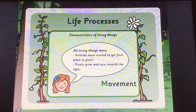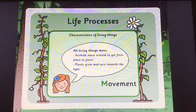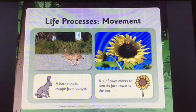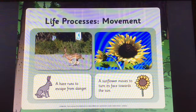All living things move. Animals move around to get from place to place. Plants grow and turn towards the light. Here are some examples: a hare runs to escape from danger, and a sunflower moves to turn its face towards the sun.